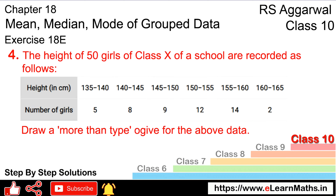Let's do question number 4 of exercise 18. The question states: the height of 50 girls of class 10 of a school was recorded as follows — 135 to 140 cm: 5 girls, 140 to 145 cm: 8 girls, 145 to 150 cm: 9 girls, 150 to 155 cm: 12 girls, 155 to 160 cm: 14 girls, and 160 to 165 cm: 2 girls.